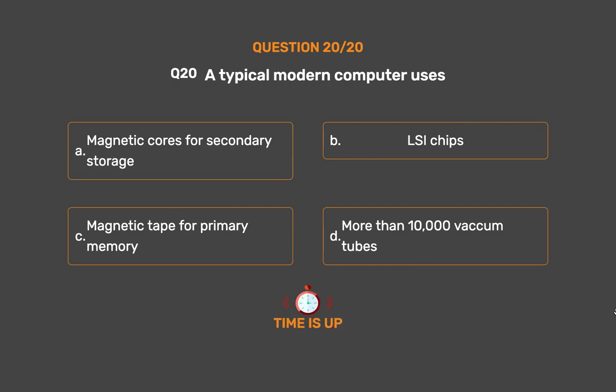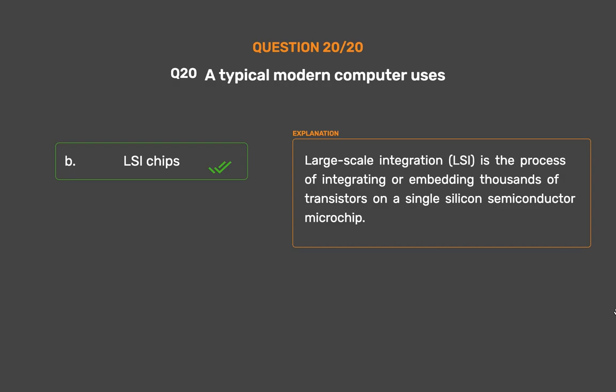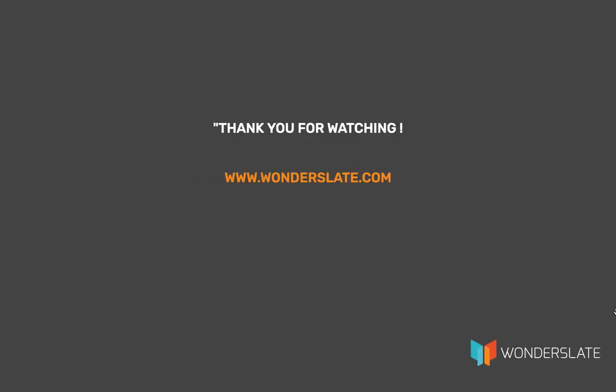The correct answer is Option B: LSI chips. Large-Scale Integration (LSI) is the process of integrating or embedding thousands of transistors on a single silicon semiconductor microchip.